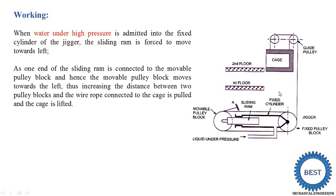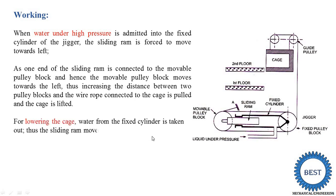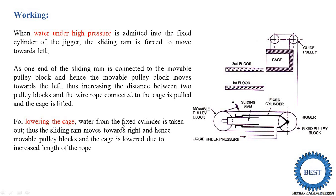Second case: how to get the cage moving in the downward direction? We need to move the sliding ramp in the right direction. For lowering the cage, water from the fixed cylinder is taken out. Whatever liquid or water is available inside is taken outside from the fixed cylinder, causing the sliding ramp to move towards the right direction automatically. This moving in the right direction means the movable pulley block and the cage lower due to the increase in the length of the rope — the rope is released in the upper direction and the cage moves into the downward direction.